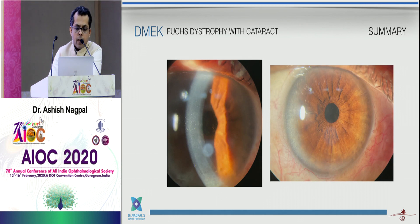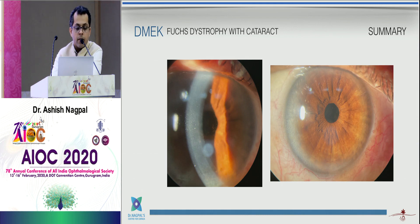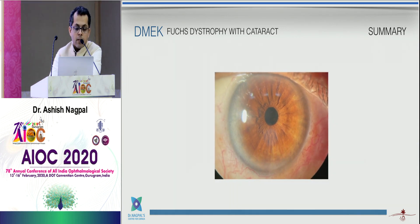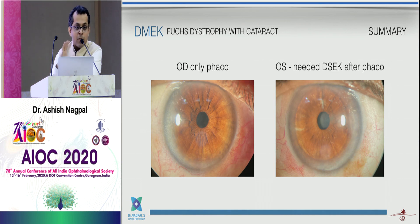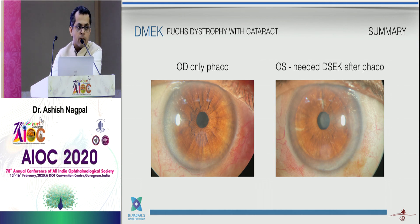One more case to illustrate unpredictability: this lady had Fuchs. Her right eye underwent cataract surgery by the referring surgeon extremely well and she's doing very well. But her other eye also underwent phaco and then decompensated — we had to do a DMEK a few years ago. In the same patient, one eye did fine with phaco and the other decompensated. It's always good to involve a cornea referral and then make a decision.